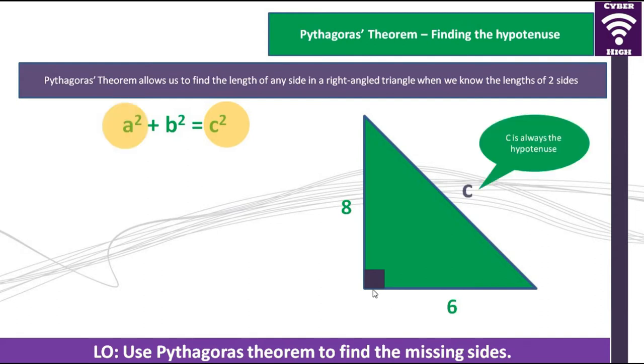We are now going to substitute the values of a and b. So, 8 will be our a and 6 will be b. Remember, this can actually interchange. You can have b as 8 and a as 6 as long as they are the shorter sides. As you substitute, we now have 8 squared plus 6 squared, which gives us c squared.